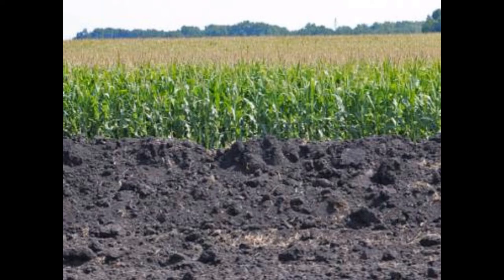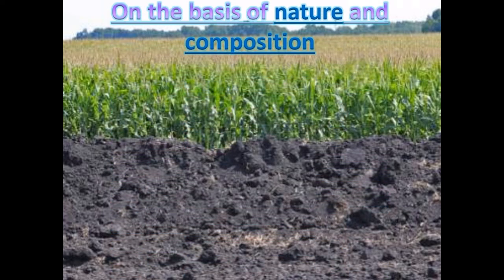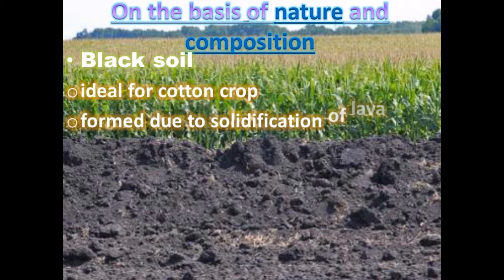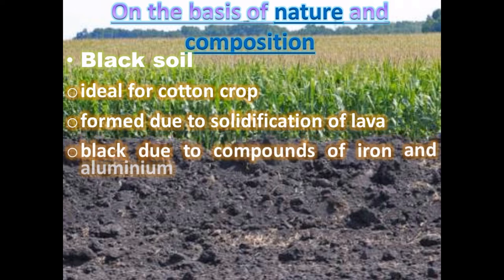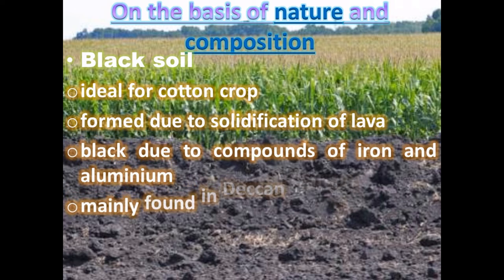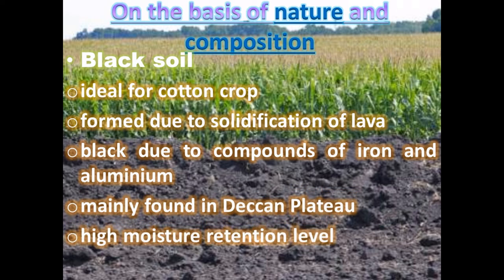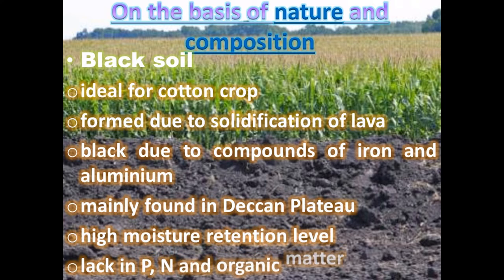On the basis of nature and composition, soil may be classified as black soil. Black soil is ideal for cotton crop production, formed due to solidification of lava, and is black due to components of iron and aluminium. It is mainly found in the Deccan Plateau and has high moisture retention but lacks phosphorous, nitrogen, and organic matter.